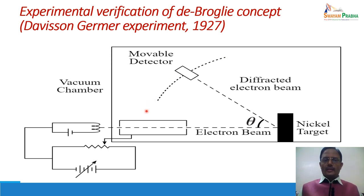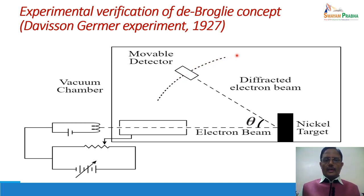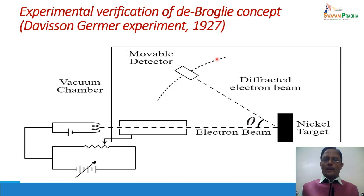This experiment in the first part considers the electron as a wave. If the electron is a wave, it will undergo diffraction by some angle θ and will be detected by the movable detector at different angles. In the first step, Davison and Germer kept the applied potential constant and varied the angle of the detector. Different intensities were obtained, and it was observed that the first maximum intensity was obtained at an angle of 50 degrees.